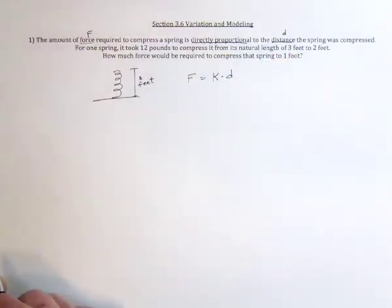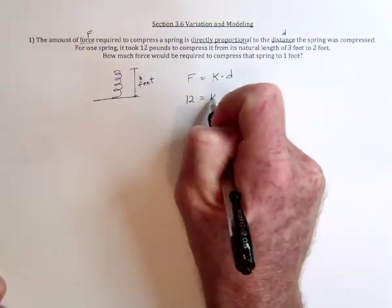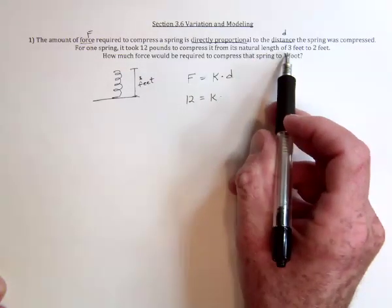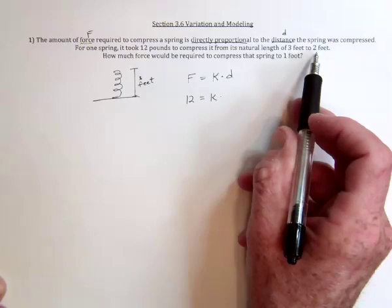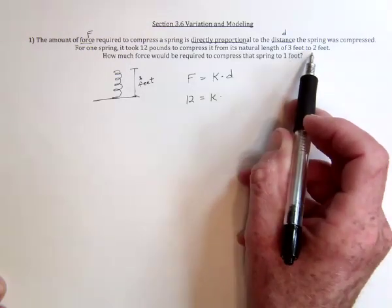And now we need to find out about this particular spring. It takes 12 pounds of force to compress it from its natural length of three feet to two feet. So that means it's been compressed by one foot as it goes from three to two feet.